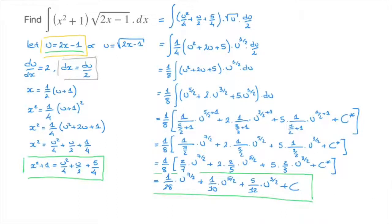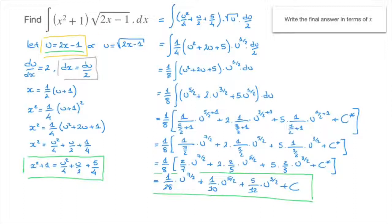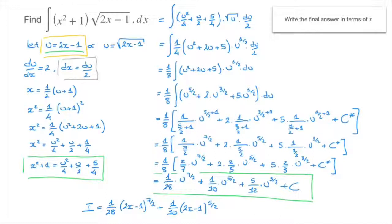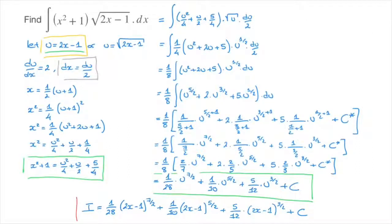All we have to do now is rewrite this answer replacing every u with its expression 2x minus 1. Our final answer is: i equals 1 over 28 times (2x minus 1) to the power of 7/2, plus 1 over 10 times (2x minus 1) to the power of 5/2, plus 5 over 12 times (2x minus 1) to the power of 3/2, plus constant of integration c.